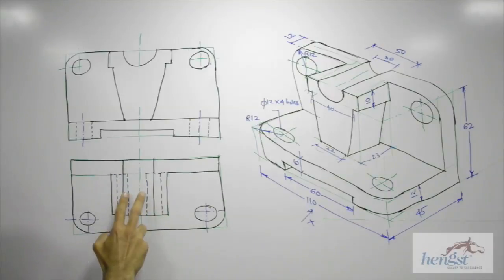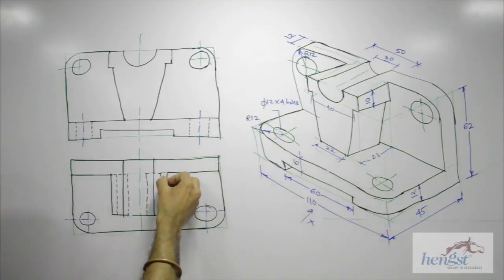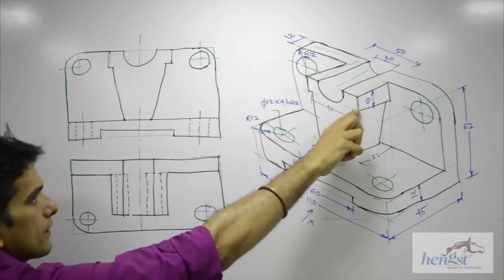So see, these two dotted lines are for this part, and these two dotted lines are for this part, for the T.